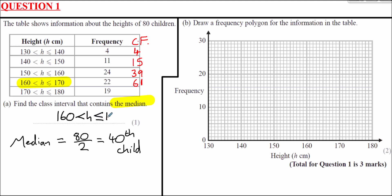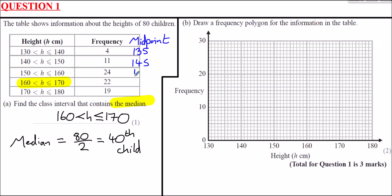So we've got one mark in the bag. For part B, we're asked to draw a frequency polygon. To do a frequency polygon, we take the midpoints of all the intervals. Halfway between 130 and 140 is 135. You can calculate these by adding the boundary values together and dividing by 2. The midpoints are: 135, 145, 155, 165, and finally 175.